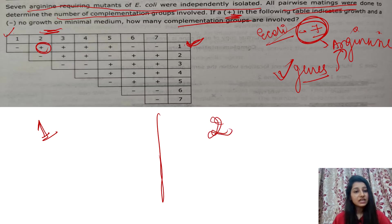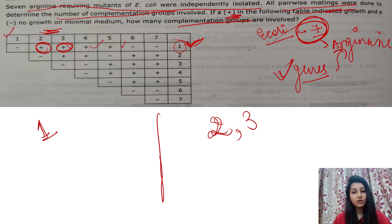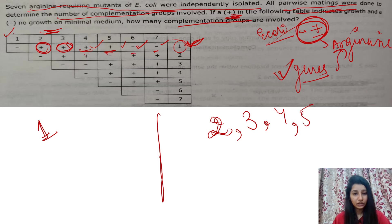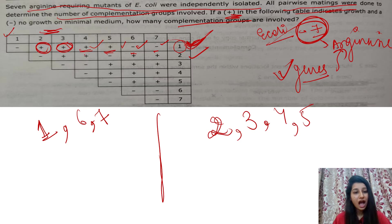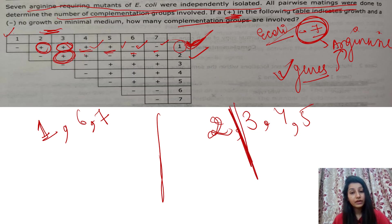When mutant 1 is crossed with mutant 3, positive result — so mutant 1 and mutant 3 are in different complementation groups. Mutant 1 crossed with mutants 4 and 5 also shows positive — different complementation groups. But mutants 6 and 7 show negative with mutant 1. So mutants 1, 6, and 7 are in the same complementation group. Moving to mutant 2: it shows positive with mutant 3 — so mutant 2 and mutant 3 are in different complementation groups. Mutant 2 and mutant 4 also show positive.